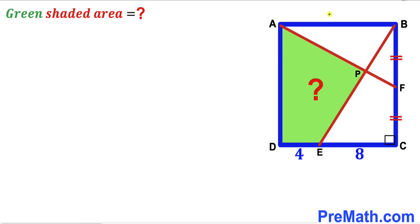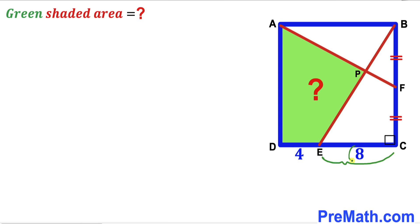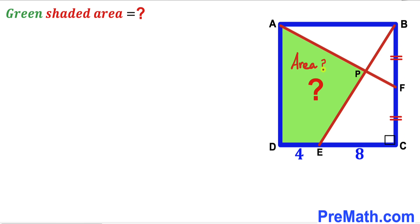Welcome to Premath. In this video we have this blue square ABCD along with two line segments AF and BE, resulting in this green shaded quadrilateral ADEP. Segment DE is 4 units, segment EC is 8 units, and segment BF equals segment FC. Our task is to calculate the area of this green shaded region.